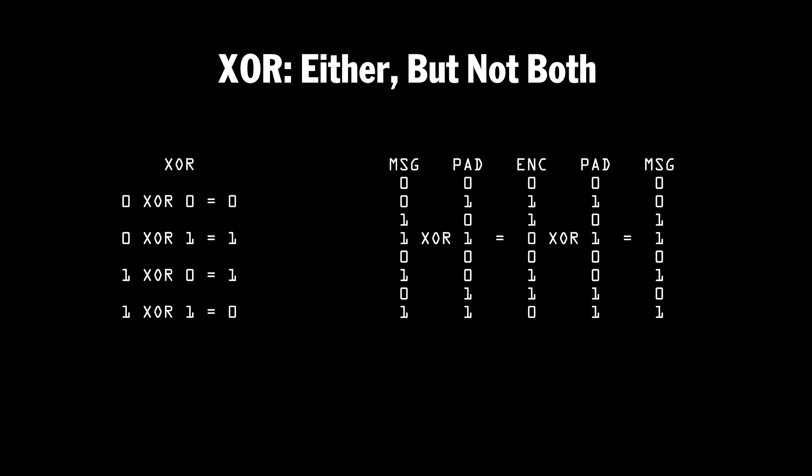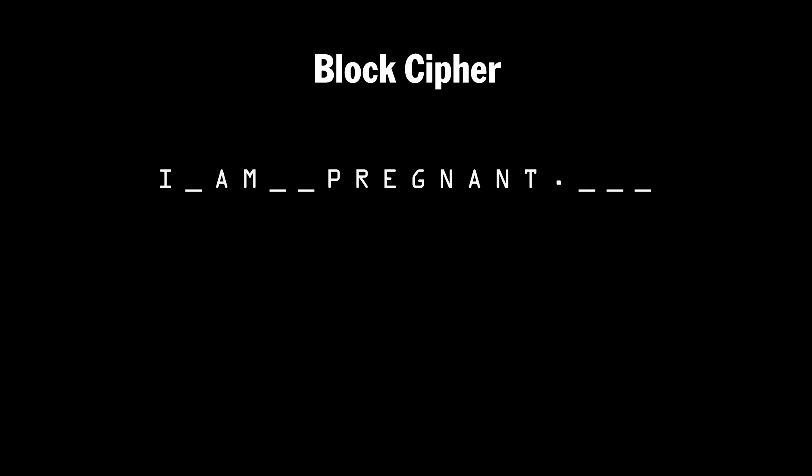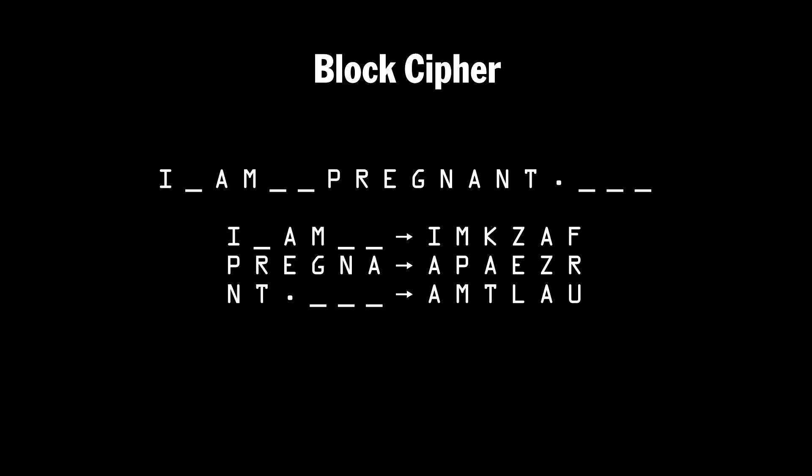Let's finish off this first video by looking at one kind of secret key encryption used in the real world: the block cipher. In a block cipher, the message is broken down into fixed-length blocks. Since our message is 18 characters, let's break it down into three groups of six. We then have a secret key that is used to scramble each block in succession.